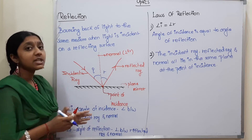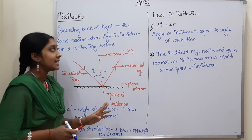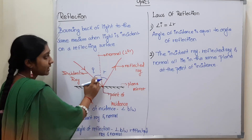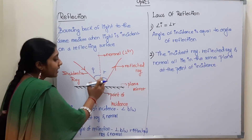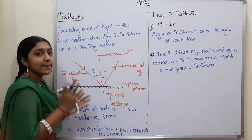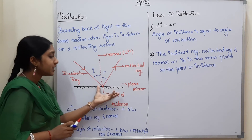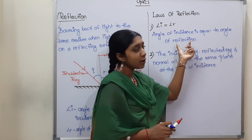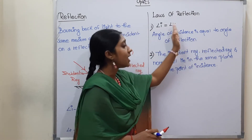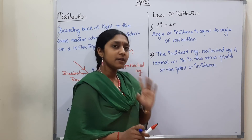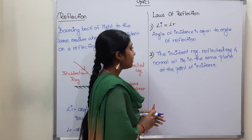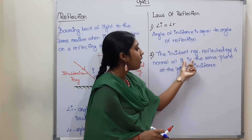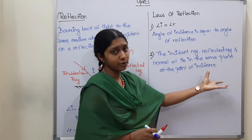Reflection has two important laws. The first law states that the angle of incidence is equal to the angle of reflection — angle I is equal to angle R. The second law states that the incident ray, reflected ray, and normal all lie in the same plane at the point of incidence.